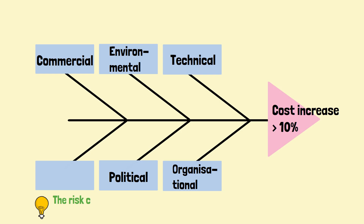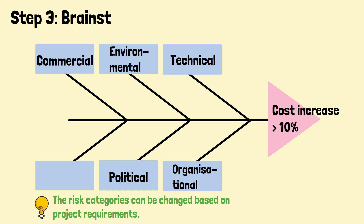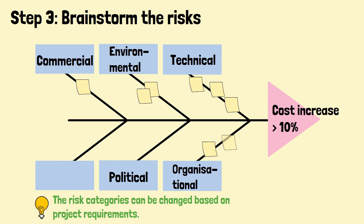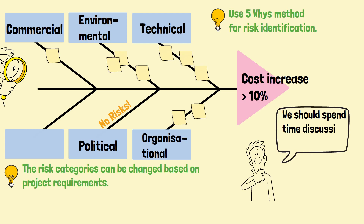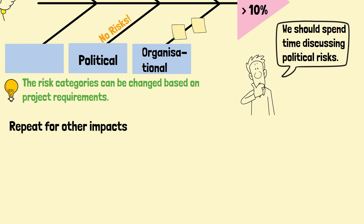Step 3: Brainstorm the risks. All the risks identified can be put onto the different categories on the diagram. The 5 Whys technique can be used to trigger more risk discussion. Before ending the risk session, the participants should have a look at the diagram. If the numbers of risks in certain categories are lean, the participants need to spend some time to exhaust the risks in these categories. The process will be repeated for different risk events or impacts.